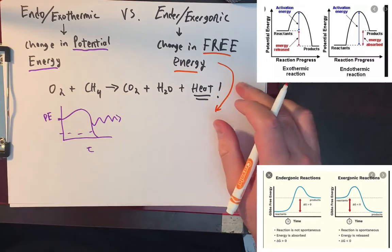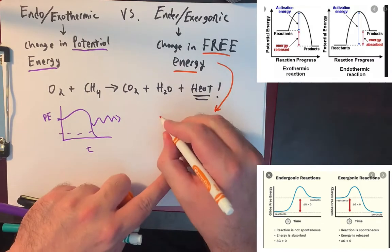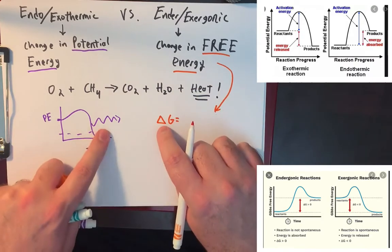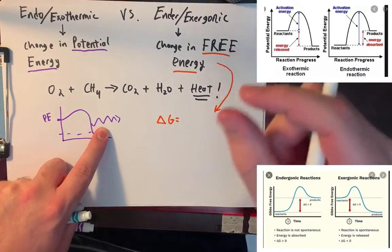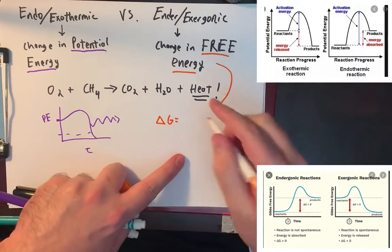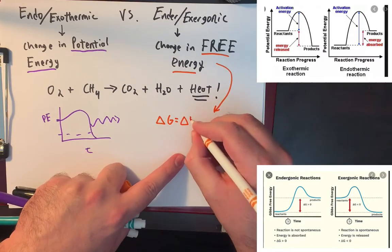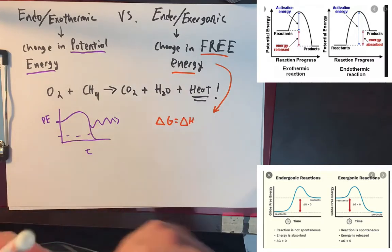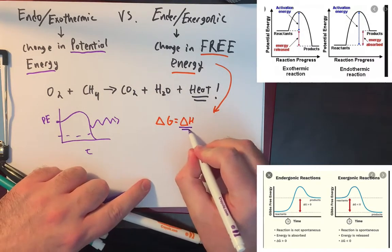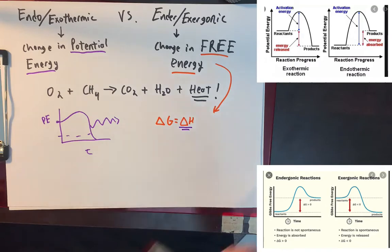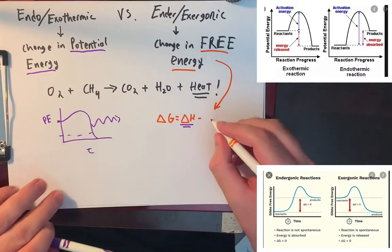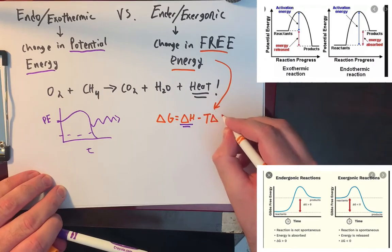So the way that we can measure that, the change in Gibbs free energy, is we have to account for the energy that we've got going out here with the amount of energy that we're going to lose from entropy. So we say delta G is equal to delta H, that's this, minus T delta S. This is one of the greatest equations.